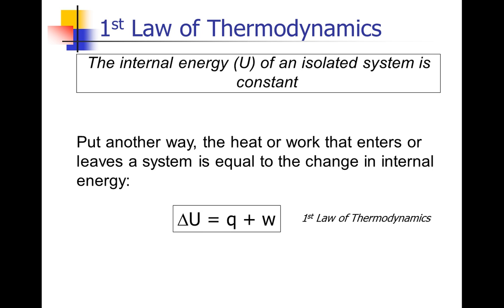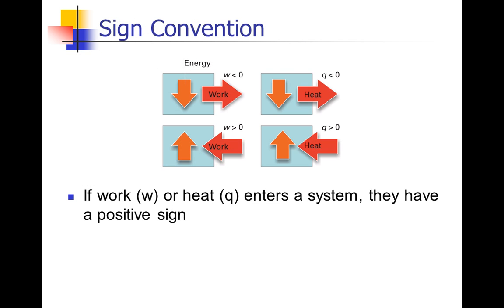We need a sign convention. If heat or work leaves a system, the amount of energy decreases, so they are given a negative sign. If heat or work enters a system, they are given a positive sign. Therefore, if we have an exothermic reaction where heat is given off, we'd give those energy values negative signs, because heat will be leaving the system.